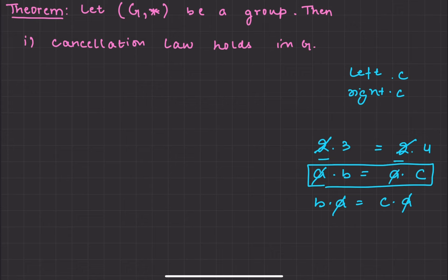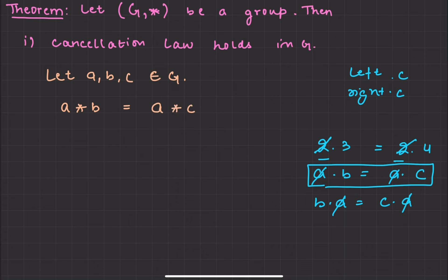So let's prove it. For the proving part, let a, b, and c be three elements belonging to group G, and suppose a operation b is equal to a operation c. Now what we have to do is remove this a. A very fundamental thing is that if we have to remove something, we take its inverse, so we can get the answer as b is equal to c. So here we have to take the inverse.